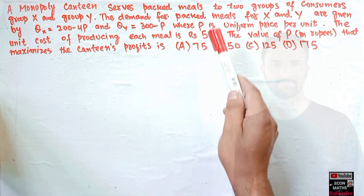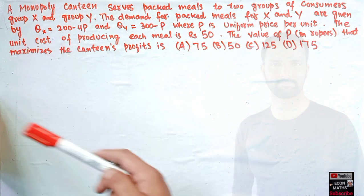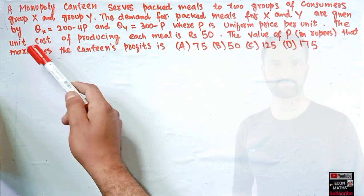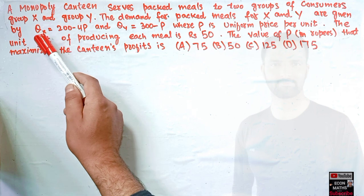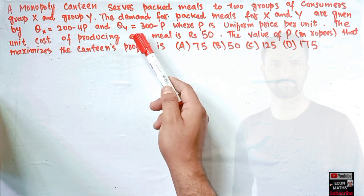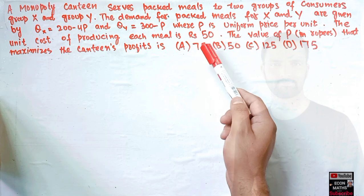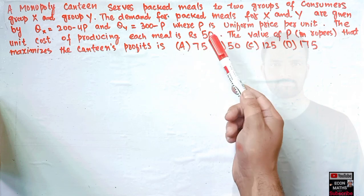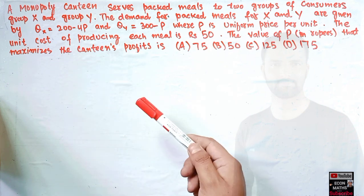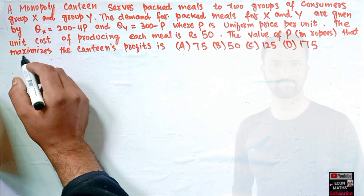The question is: a monopoly canteen serves packet meals to two groups of consumers, Group X and Group Y. The demand for Group X is QX = 200 − 4P, and for Group Y it is QY = 300 − P, where P is a uniform price per unit. The unit cost of producing each meal is rupees 50. We need to find the value of P in rupees that maximizes profits. The options are 75, 50, 125, or 175.